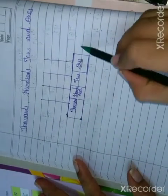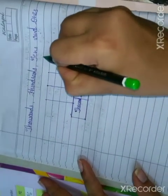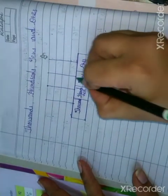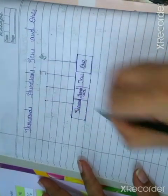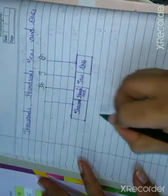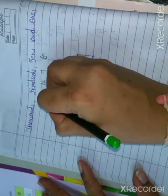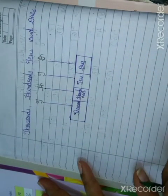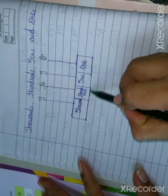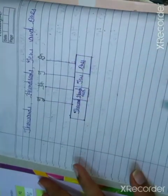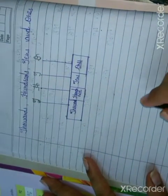You can see here, this is your abacus. This is your ones place. This is your tens place. This is your hundreds place. And this is your new one thousands place. In second standard you learn till the hundreds, but in third standard thousands is the new one. Let's take one example.